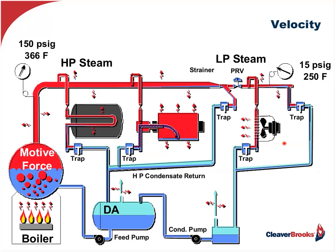Talking about steam and condensate, velocity becomes extremely important. The velocity in the steam distribution piping as well as in the condensate can cause problems if it exceeds certain levels. One of the problems is noise, another would be erosion of the piping, and of course water hammer, which we'll spend some time discussing.